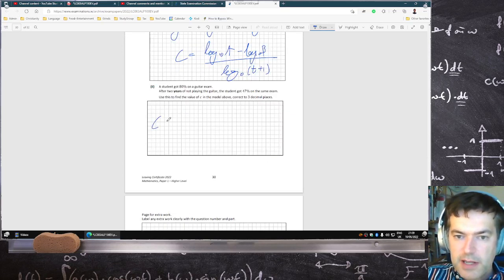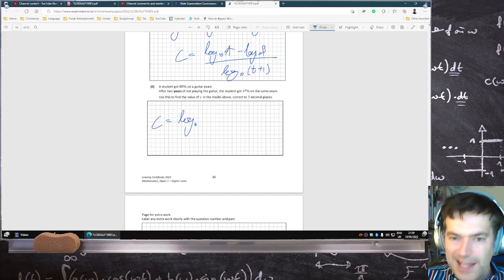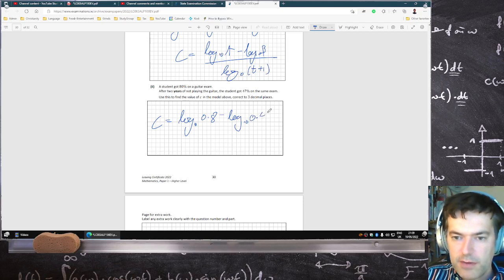And then using the formula, you have C equals log 10 A. And A is the initial value. I mixed up my A and B. A is the initial value, so that's 0.8 minus log 10 B, which is the value a few months later. How many months later? 24 months later. 24 plus 1 is 25.